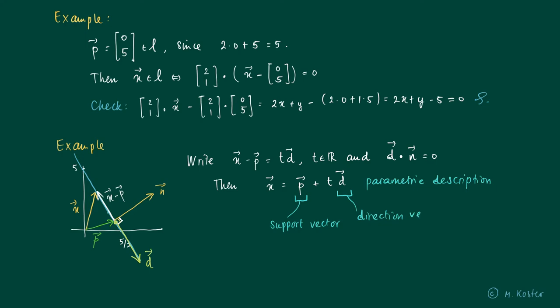So x equals the support vector plus a multiple times the direction vector. So for instance if we take p equal to (1, 3), which is on the line,